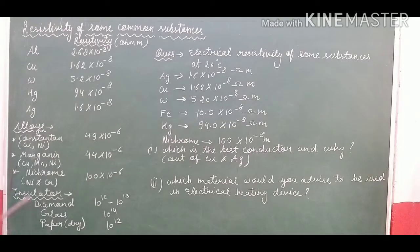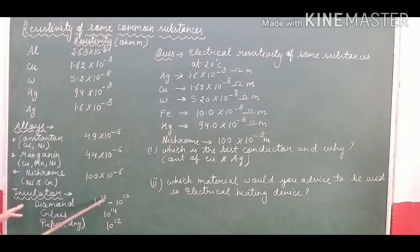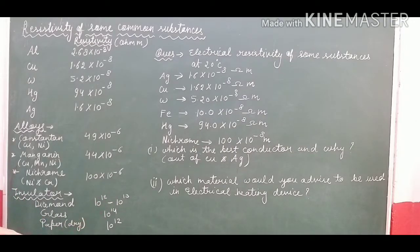Let's talk about some insulators. Insulators have very high resistivity values. Diamond — which we know is a bad conductor — has a resistivity of 10¹² to 10¹³. Glass is 10¹⁴, and paper is 10¹².